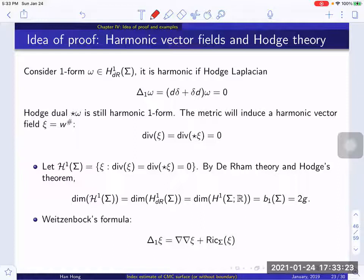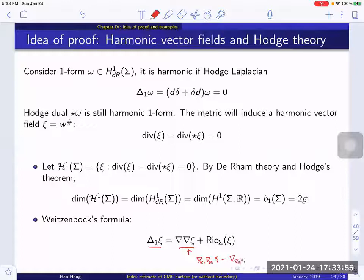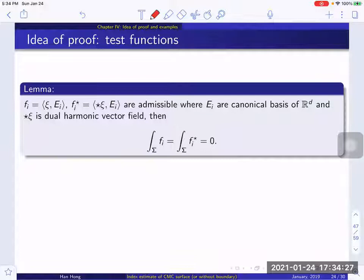The second ingredient is the Bochner-Weitzenböck formula, which relates the Hodge Laplacian and the Rough Laplacian by a Ricci term. The Rough Laplacian, in local orthonormal frame E_i, is ∇_{E_i}∇_{E_i} minus ∇_{∇_{E_i}E_i}. The Ricci term is the endomorphism Ric acting on vector fields: Ric(Ξ) inner-producted with X gives Ric(Ξ, X). With this basic knowledge, we can start the second step: finding admissible test functions. Surprisingly, the coordinates of harmonic vector fields and the coordinates of dual harmonic vector fields are all admissible — they can be used as test functions for the second variation formula, meaning they have zero mean on sigma.